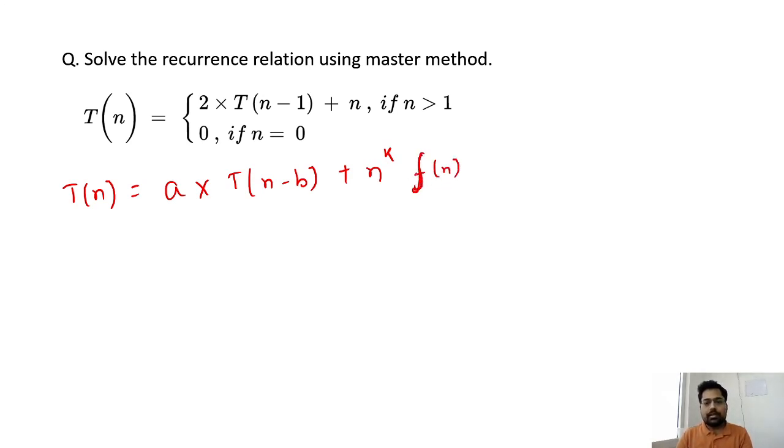Other than n to the power k, if anything is written, suppose n square by 2, you can say it's n square into 1 by 2. Here 1 by 2 is considered as f(n).